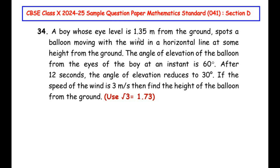A boy whose eye level is 1.35 meters from the ground spots a balloon moving with the wind in a horizontal line at some height from the ground. The angle of elevation of the balloon from the eyes of the boy at an instant is 60 degrees. After 12 seconds, the angle of elevation reduces to 30 degrees. If the speed of the wind is 3 meters per second, find the height of the balloon from the ground using √3 = 1.73.